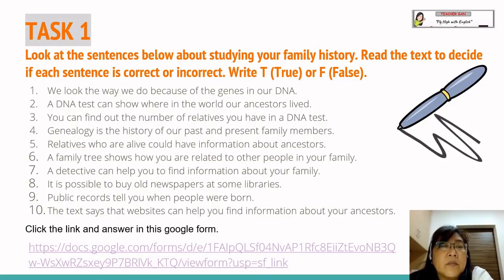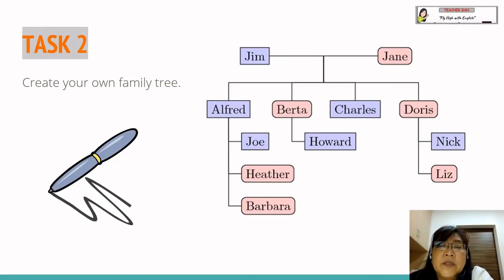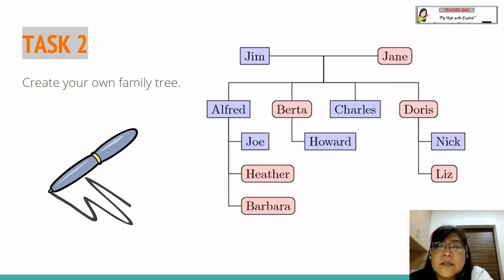Now we go to Task two. You can create your own family tree. For example: Jim is the father and Jane is the mother. Jim and Jane have four children — Alfred, Bertha, Charles, and Doris. Alfred has three children: Joe, Heather, and Barbara. Bertha has a child, Howard. Charles has no children. Doris has two kids — Nick and Liz. You can create a family tree by replacing Jim with your father's name and Jane with your mother's name, then continue with their siblings. Try this task in your exercise book.